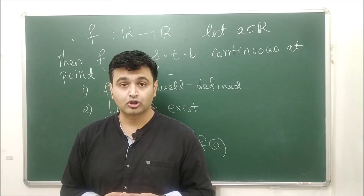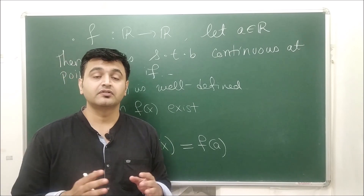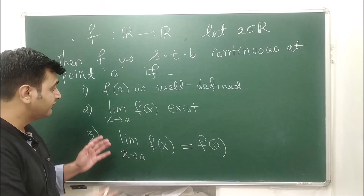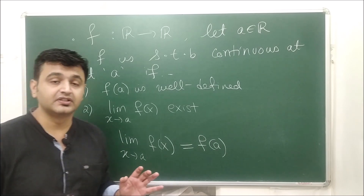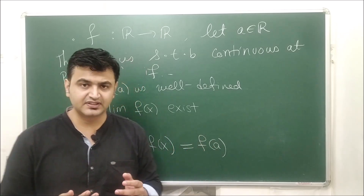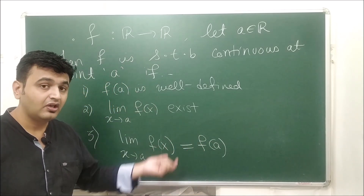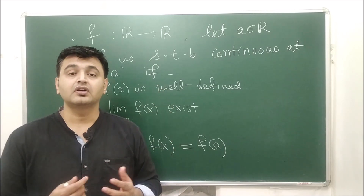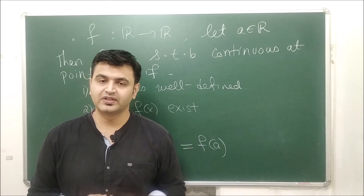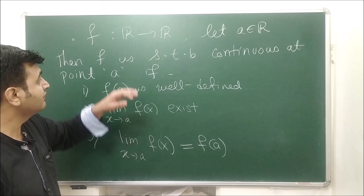Today I'm going to talk about the notion of continuous functions. First we'll see the definition of a continuous function, then we'll try to understand it with the help of a graph, because once we have a graph it's very easy to understand the concept. Then we'll see why we need all three conditions for a continuous function, and after the graphical part we'll jump to two or three examples.